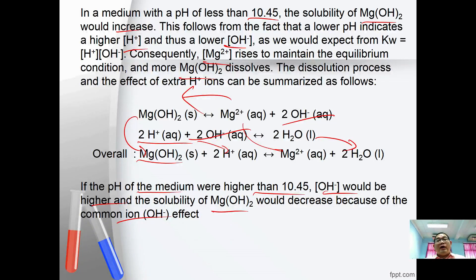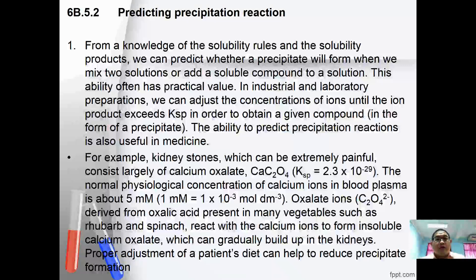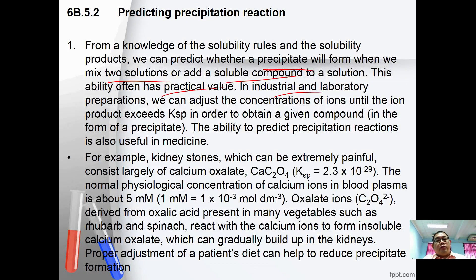Finally, we are going to learn how to predict whether a precipitate will form or not. From knowledge of solubility rules and solubility product, we can predict whether a precipitate will form when two solutions are mixed. This ability has practical value — in industry and the laboratory, we can adjust ion concentrations to exceed KSP in order to obtain a given compound. This is also useful in medicine.